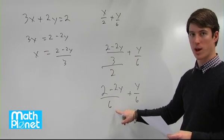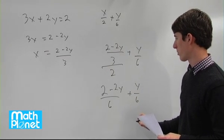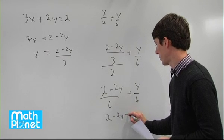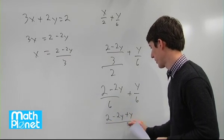Which is great. They have common denominators, we can just add them in the normal way. So we have 2 minus 2y plus y all over 6. Again, because we had common denominators, we could add the numerators normally.